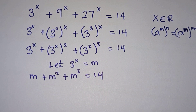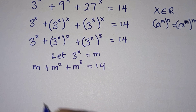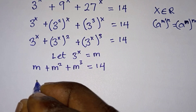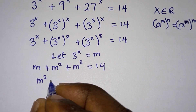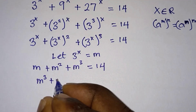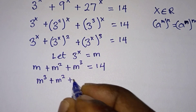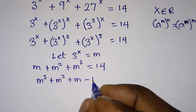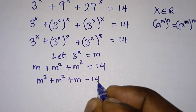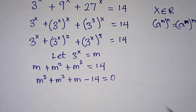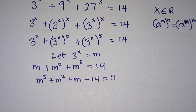We have a cubic equation, so let's equate everything to zero. We will have m to the third power plus m to the second power plus m minus 14 is equal to zero. There are a lot of ways to solve this cubic equation, but I'm going to use a shortcut.